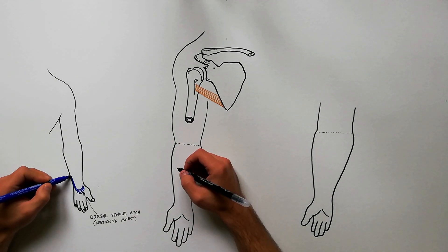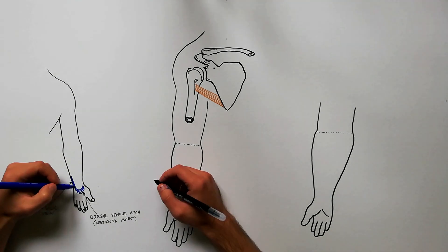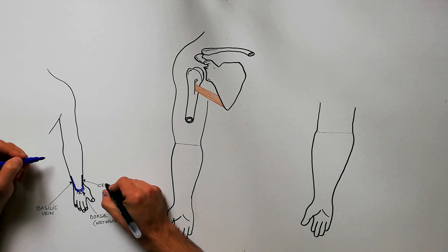From the medial end of the dorsal venous arch arises the basilic vein, and from the lateral end of the dorsal venous arch arises the cephalic vein.